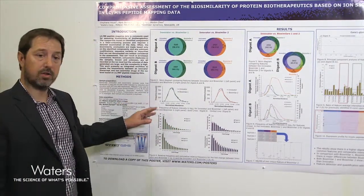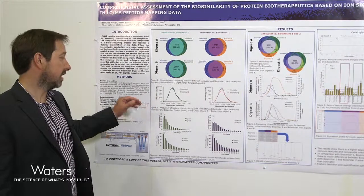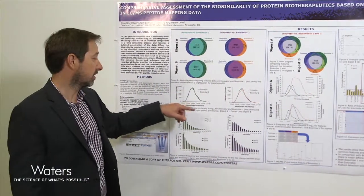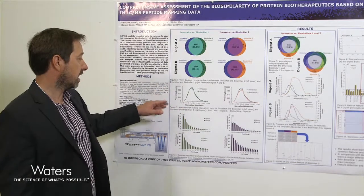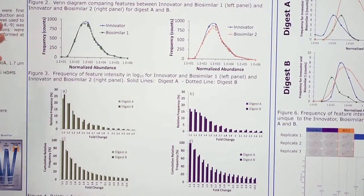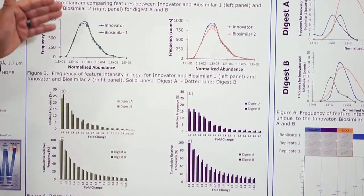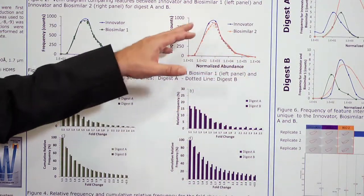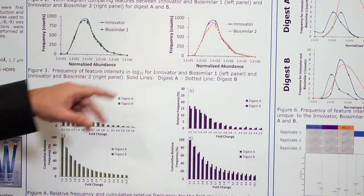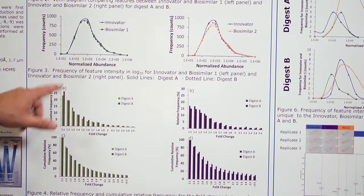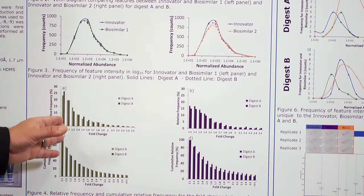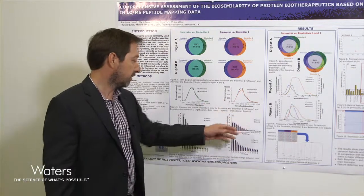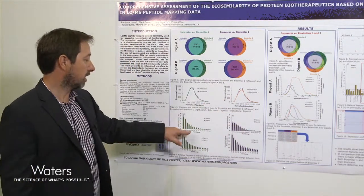Now if we look at the intensity of the features and look at the distribution in log10 — this is a frequency diagram — you can see that more or less for the innovator and biosimilar one, or the innovator and biosimilar two, the intensity distributions are the same.